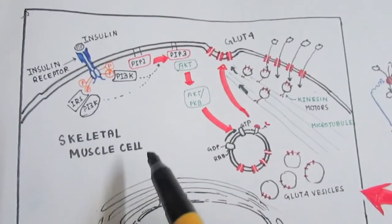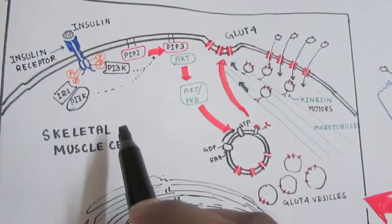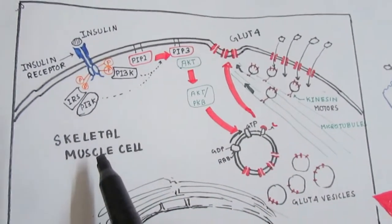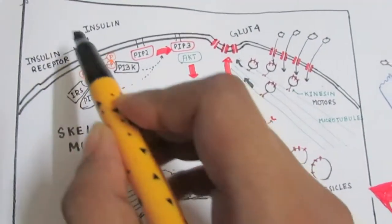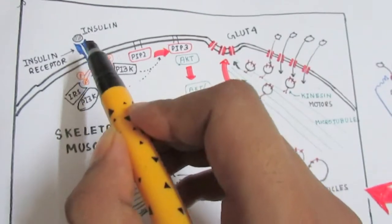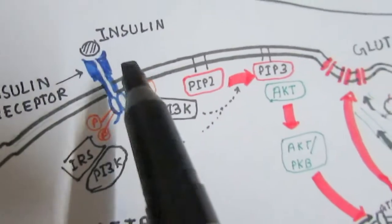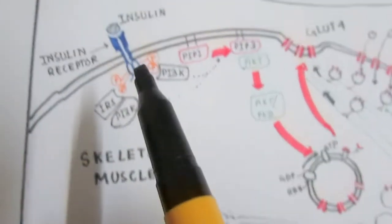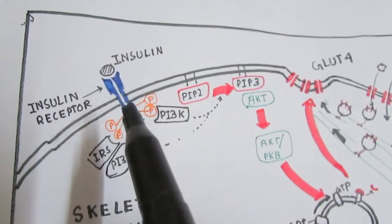Here is a skeletal muscle cell. Meanwhile, when blood glucose level increases, the body senses that blood glucose is pretty high, so the body will secrete insulin from the pancreas. This insulin will bind to the insulin receptor on the surface of the skeletal muscle cell—the receptor tyrosine kinase, or RTK.